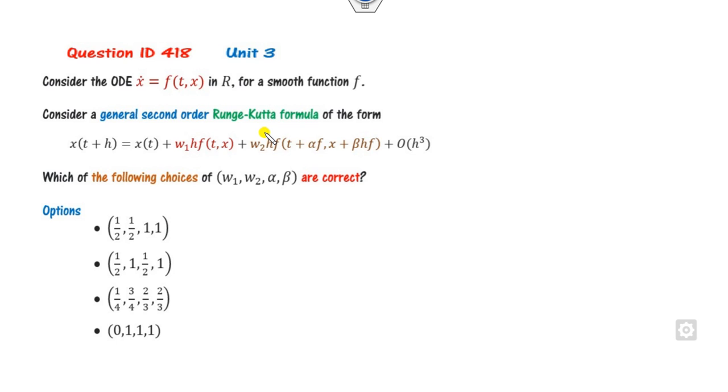Look at this question again. Remember, read the statement very smoothly, 10 seconds more than your usual time. A second order ordinary differential equation is given. A second order Runge-Kutta method is provided. What are the possible choices of W1, W2, alpha, and beta? There's no need to solve the full problem. We all know what the Runge-Kutta second order method is.